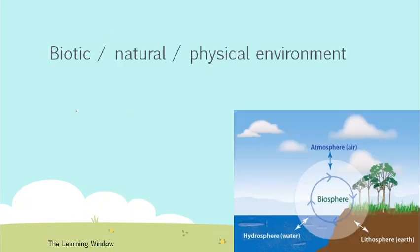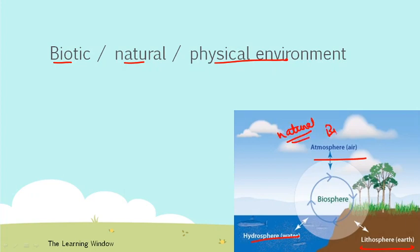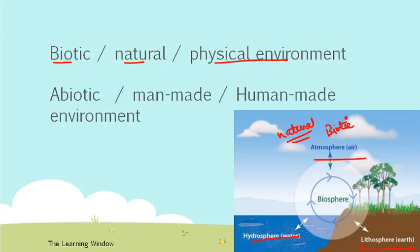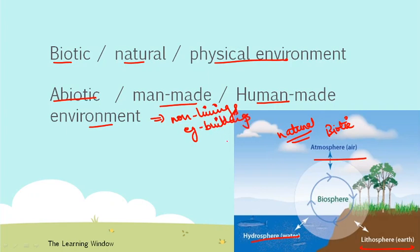Moving on, we have a few terms to learn: biotic, natural, and physical environment. The natural or physical environment is what is naturally present — like the atmosphere, hydrosphere, and lithosphere. The biotic environment refers to living organisms. The human-made or abiotic environment includes non-living structures, for example buildings, parks, and bridges.